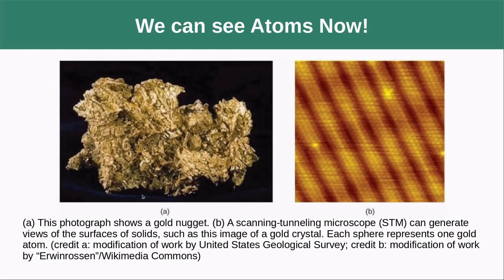For a long time the atom was just a theoretical idea, but we've actually gotten to a point where we can see atoms using microscopy, such as scanning tunneling microscopes and electron microscopes. Here we can see a string of gold atoms all together. There's a striation pattern — a kind of grain to the overall metal — and where it's pressed up you can start to see the individual atoms.